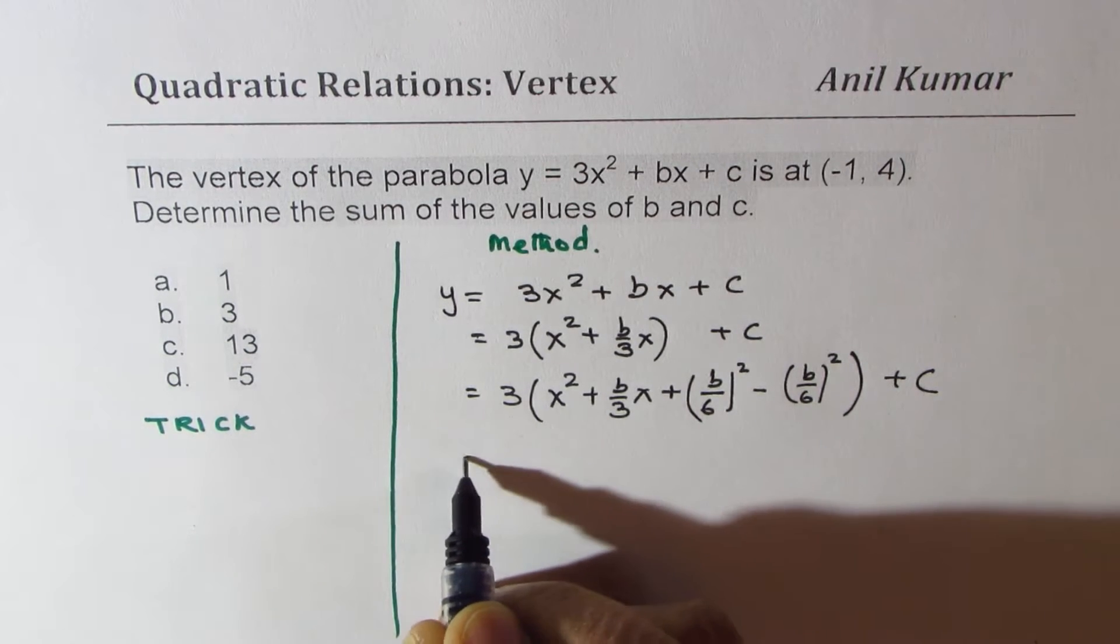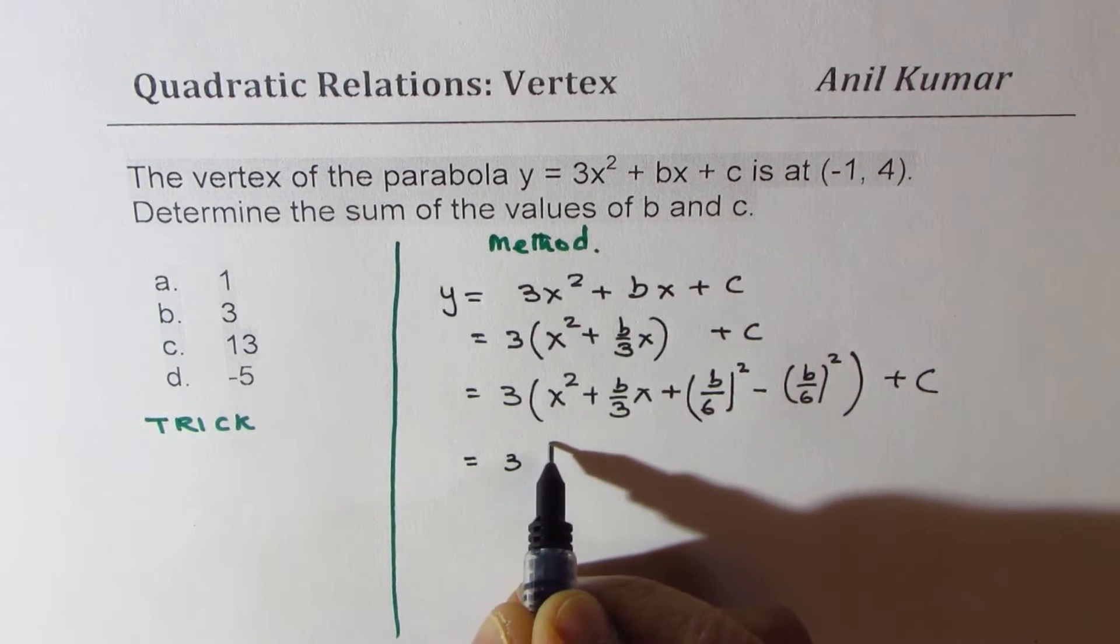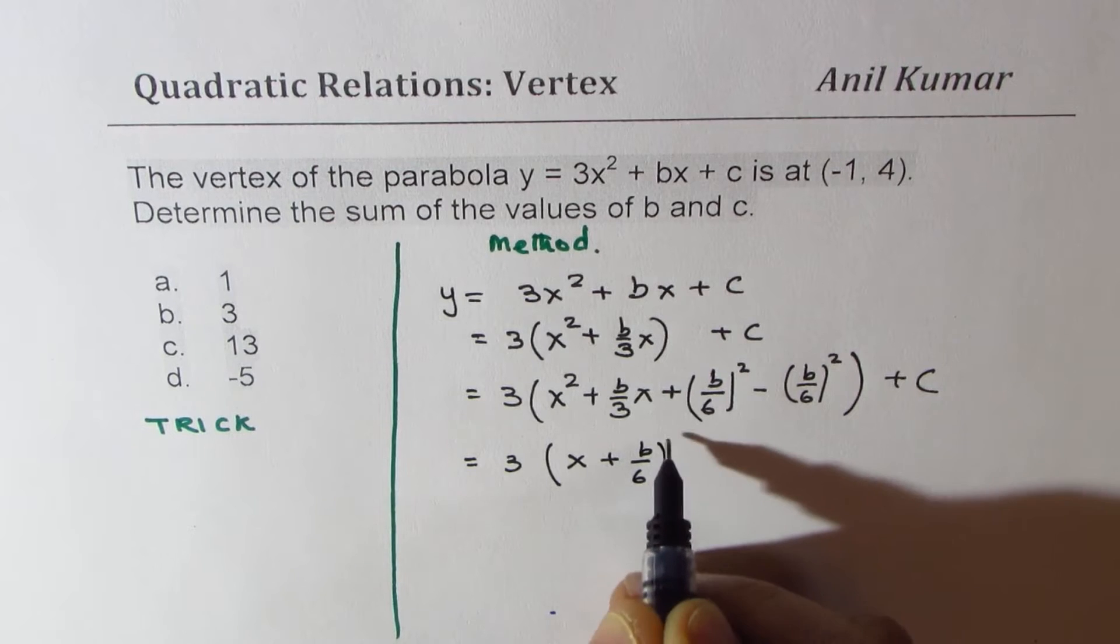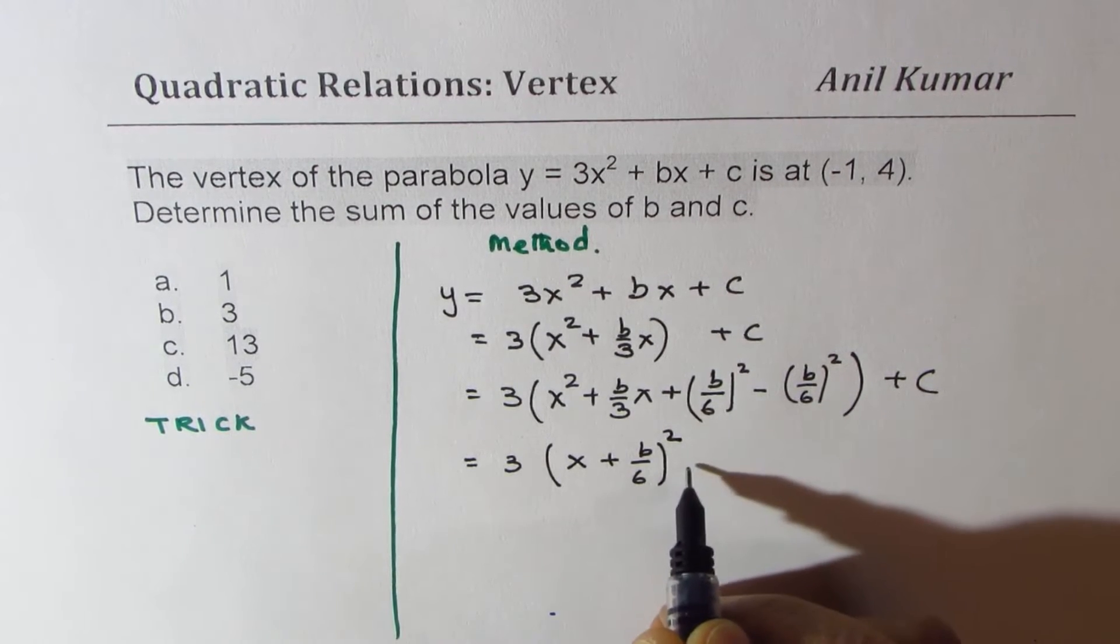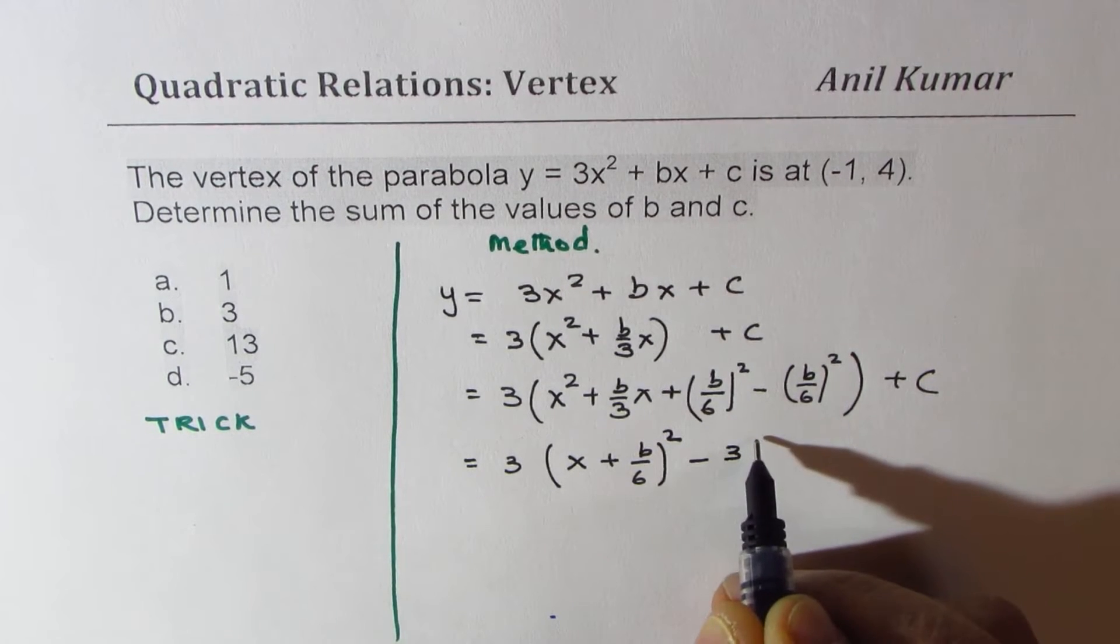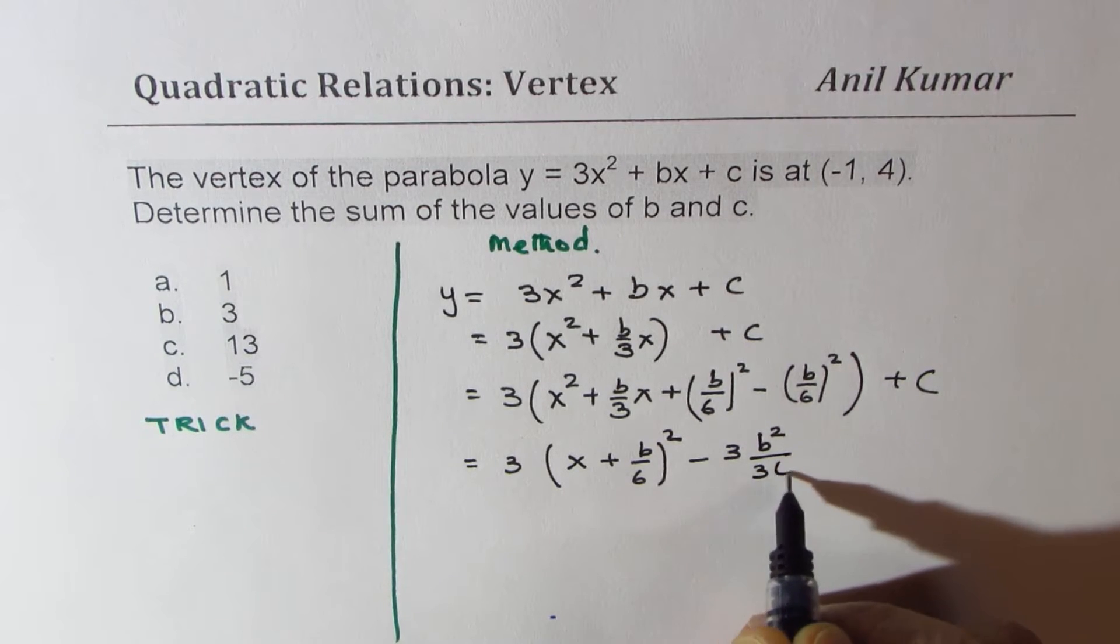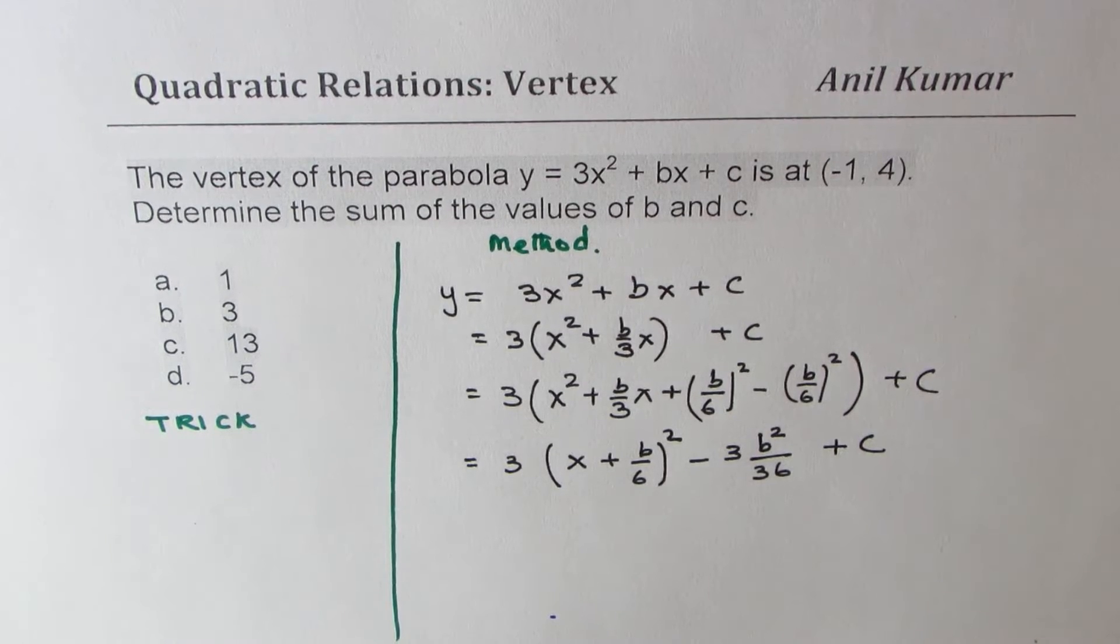Now the first 3 terms give you a factor, a perfect square, which is x plus b over 6 whole square. And you can open this, get 3 times. Write this as b squared over 36 plus c.